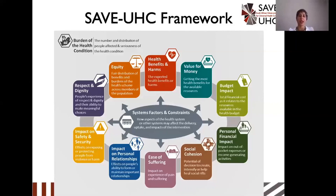To augment these economic considerations, we included domains around equity, respect and dignity, impact on safety and security, impact on personal relationships, ease of suffering, social cohesion, and personal financial impact. To give a quick example: considering safety and security as well as personal relationships, take a situation where a contraceptive implant may be useful for women residing in a patriarchal society or living in a violent relationship — this framework might actually help augment their ability to undertake autonomous reproductive decisions. In order to test the framework, we undertook simulated appraisal committees. We were meant to do five, but due to COVID-19, we were only able to undertake three.